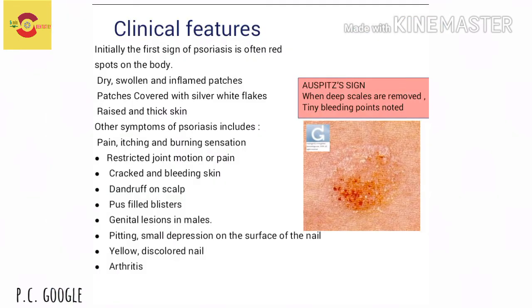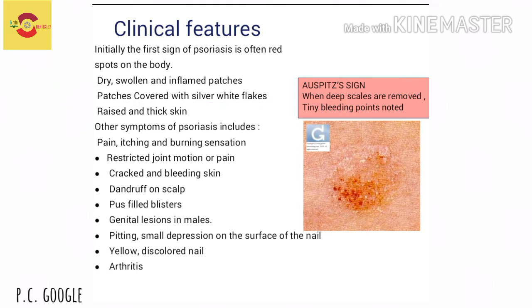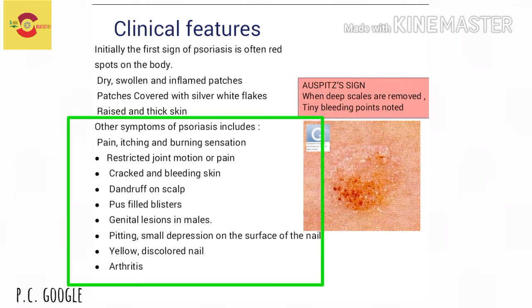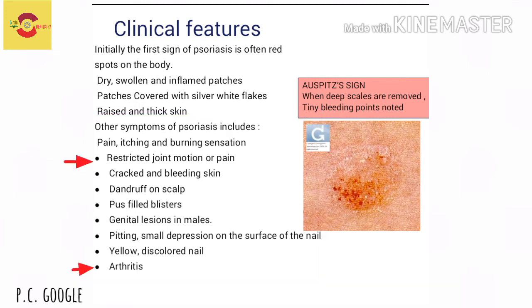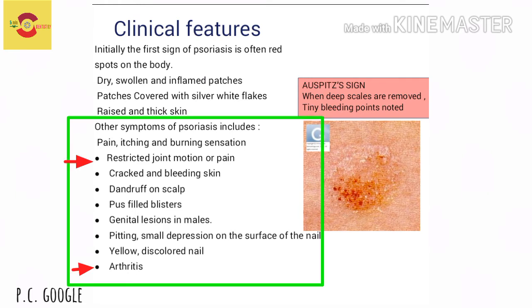The first sign of psoriasis is often red spots on the body. Dry, swollen, or inflamed patches follow, covered with silver-white flakes. The skin is usually raised and thick. Other symptoms include pain, itching, and burning sensation. Sometimes joints are involved, with restricted joint motion, pain, or arthritis.